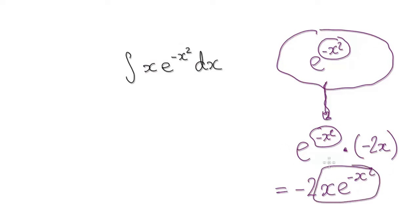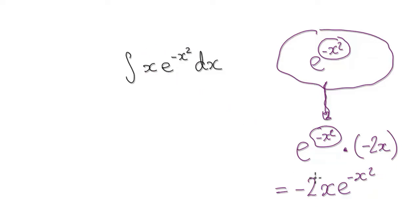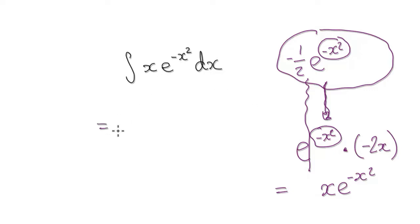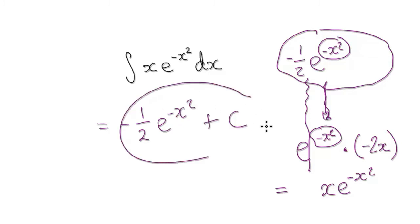This thing here is the same as this thing here — we just don't want this negative 2. So go back to your initial guess and stick negative 1 half in here. Now when you differentiate this, you will negate that negative 2. So the answer is minus 1 half · e to the minus x squared, plus c. This is your final answer.